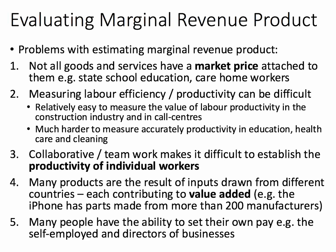Third point: increasingly we live in a world where collaboration is the default — people working in teams — and in those kinds of jobs it's very hard to establish the productivity of the marginal worker. And a fourth related point: in the world of globalisation, many products are the result of inputs from many different countries, multinationals and businesses located around the world, each contributing to the value added within a final product. Think about the Samsung Galaxy or the iPhone from Apple — they have component parts from more than 200 manufacturers located in 60 countries. It's very hard to work out the marginal revenue product of each individual worker in those factories.